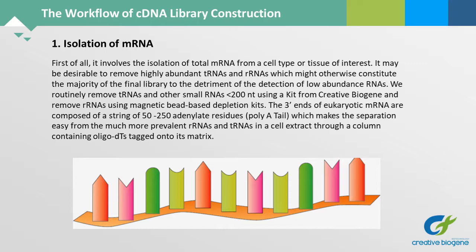We routinely remove tRNAs and other small RNAs less than 200 nt using a kit from Creative Biogene, and remove rRNAs using magnetic bead-based depletion kits. The three-prime ends of eukaryotic mRNA are composed of a string of 50–250 adenylate residues, which makes the separation easy from the much more prevalent rRNAs and tRNAs in a cell extract, through a column containing oligo-dT tagged onto its matrix.